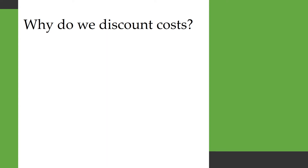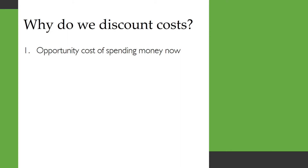Why do we discount costs like that? One, there's an opportunity cost of spending money now. If we have the money to spend but we spend it, that means we can't invest it and have more money later. Alternatively, if we don't have the money now, then we have to stop consuming things that we're already consuming, or we have to borrow money at an interest rate.